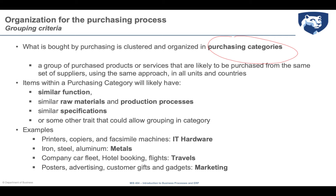Purchasing categories are items having a similar function, produced using similar raw materials and production processes, with similar specifications that can be homogeneously grouped. For example, printers, copiers, and fax machines can be grouped into IT hardware. Or iron, steel, and aluminum are all metals forming the purchasing category metals. Company car fleet, hotel booking, and flights form the category of travel purchases. Posters, advertising, customer gifts, and gadgets form the category of marketing purchases.